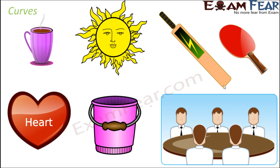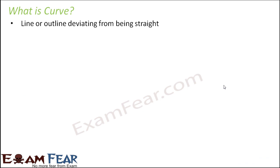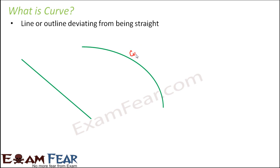So what are curves? A curve is a line or outline deviating from being straight. So anything that is not straight is going to be a curve. A curve can be a line — as mentioned before, a line can be a straight line or it can also be a curved line. Or a curve can just be an outline. Think of this line — it is a straight line. The moment you curve it, something like this, it becomes a curved line. For any line or outline to become a curve, the only requirement is that it should not be straight. So anything that is deviating from being straight is a curve.